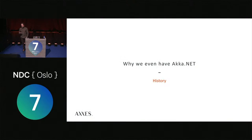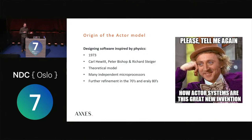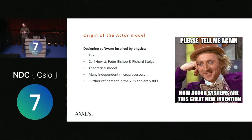To dive into a bit of history, we need to think about why we even have ACA.NET. The first ideas about building software that resembles physics and the real world date from the 1970s — just like a lot of things we use today. Maybe people back then were less distracted by smartphones. Those ideas were refined throughout the 70s into the early 80s.